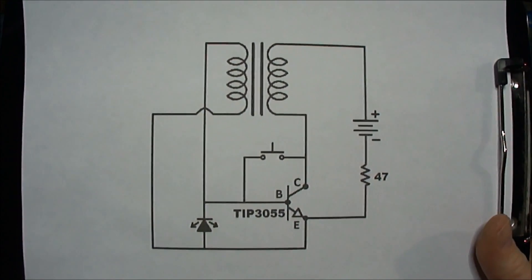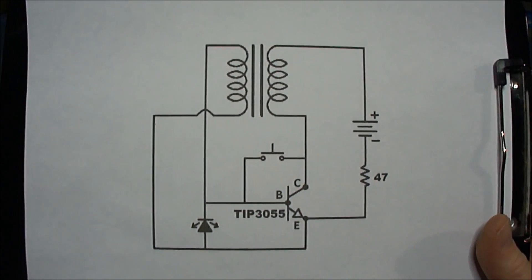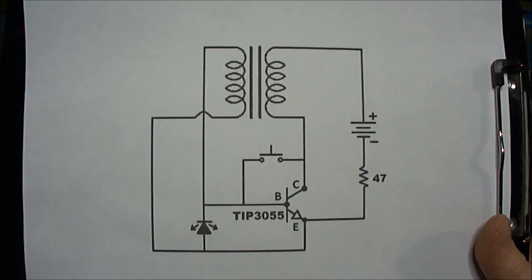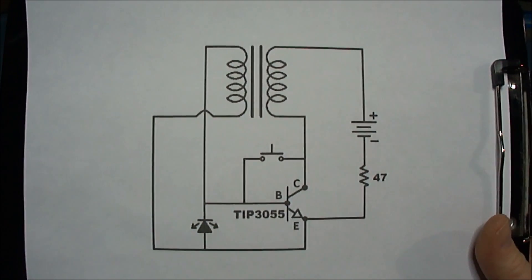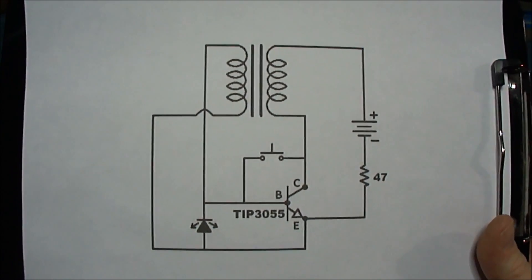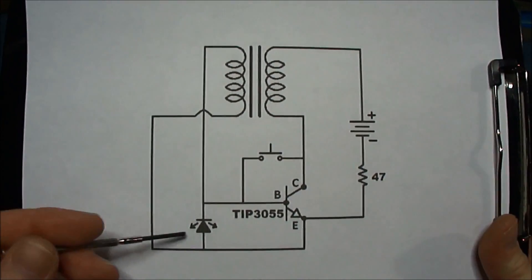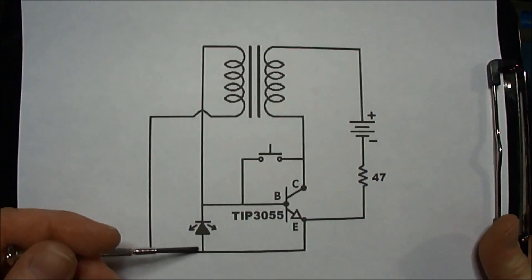This is a replication and modification of the emitter base Jewel Thief driver circuit Tin Man has shown on his videos recently. He's driving the LED between the emitter and base.